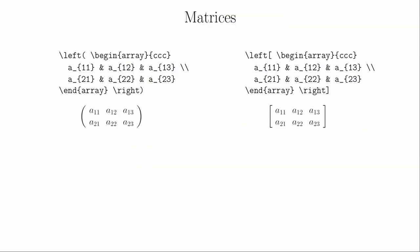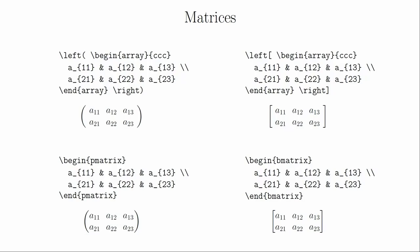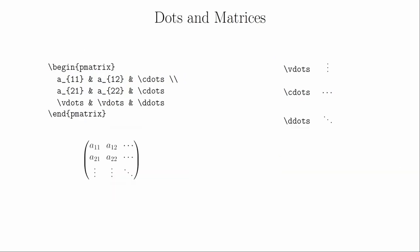The common use for arrays is to create matrices, which are usually denoted by parentheses or brackets around the array. These can be created manually using the \left and \right commands, but the brackets and spacing for arrays built this way can sometimes be larger than necessary. Fortunately, the AMS Math package has commands to make matrices easier. With their matrix environments — pmatrix and bmatrix — you do not need to specify the columns in advance. You simply decide what type of symbols you want around the outside and jump straight into defining the content of the cells. There are also special dot symbols helpful in matrices: \vdots makes a vertical ellipsis, \cdots makes horizontal ellipses, \ddots makes diagonally downward dots, and the mathdots package provides \iddots for diagonally upward dots.